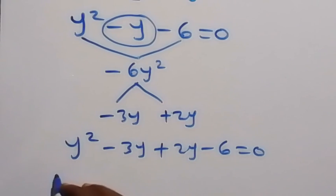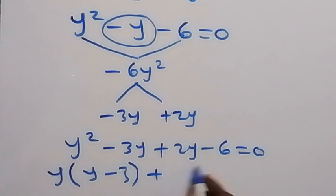Then from here, from these two terms, we factor what is common. Y is common here. We have y minus 3 left, then plus what is common here. We have 2, then y minus 3 left, which is equal to 0.